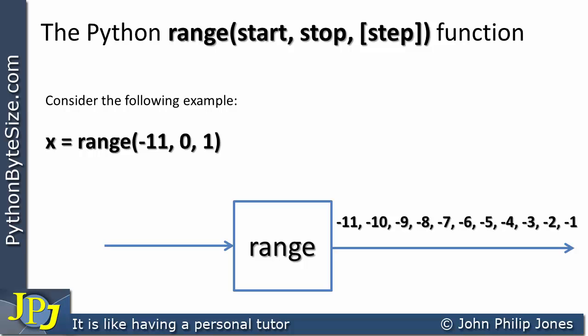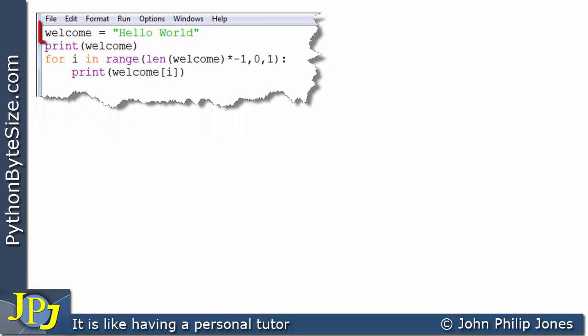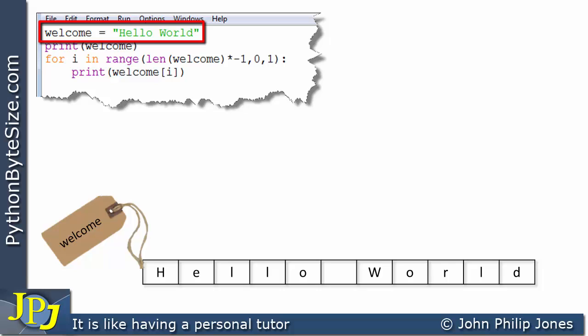This is going to be useful when we look at backward indexing across a Python string. Let's consider this computer program. The first line is welcome assigned 'Hello World'. That's going to bind the identifier welcome to an instance of the string class. I'm going to show the value of that particular object labeled with the identifier welcome.